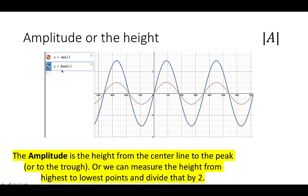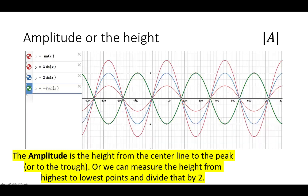In this example, I multiply the sine function by 3, and notice that the height is now 3 units — from the center line to the highest point is 3 units. Combining all these different changes in amplitude: the graph of y equals sine x is the red graph at the middle; y equals 3 sine x is the tallest graph; y equals 2 sine x is the blue graph; and when we change the sign from positive 2 to negative 2, we reflect the blue graph to appear as the green graph.